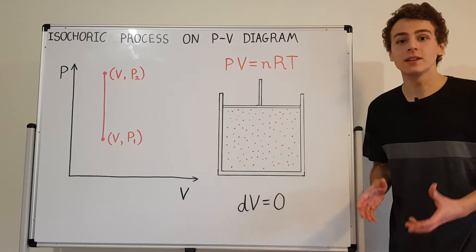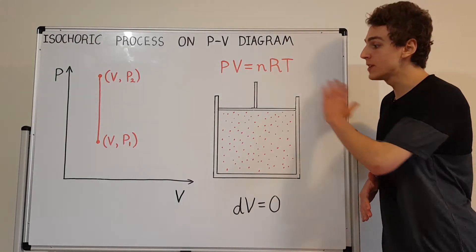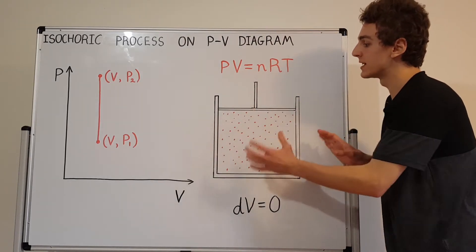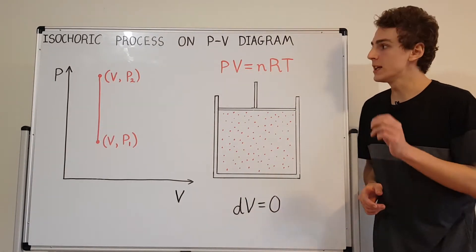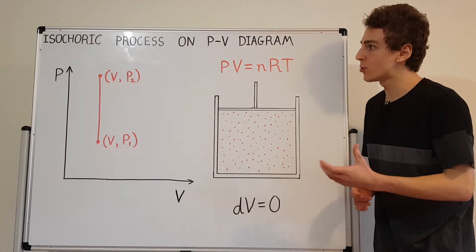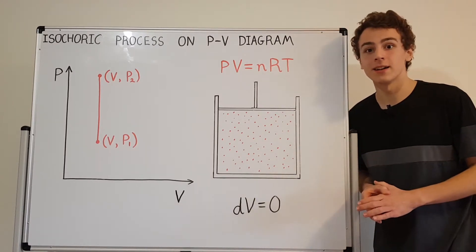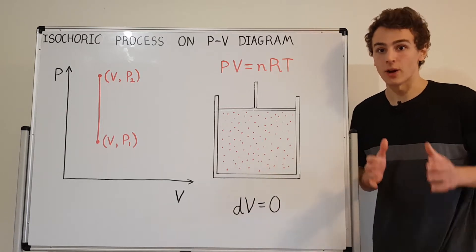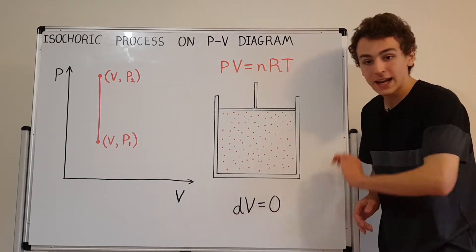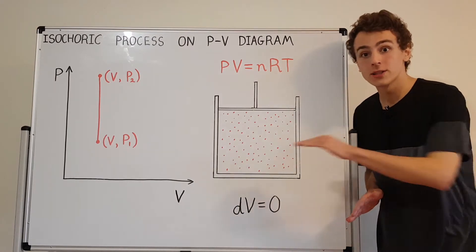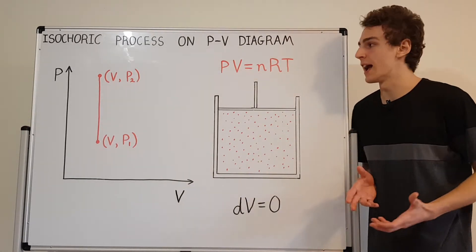In this video, I'm going to use the PV diagram to represent an isochoric process. Specifically, I'm going to be looking at the physical system of an ideal gas enclosed in a container that has a piston. Another name for an isochoric process is an isovolumetric process — isovolumetric means the volume has to be constant. So dV has to be zero; the change in volume at any point has to be zero. The more common name is isochoric, but isovolumetric is also used, and those are interchangeable.